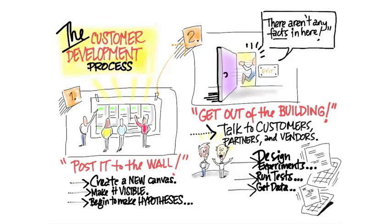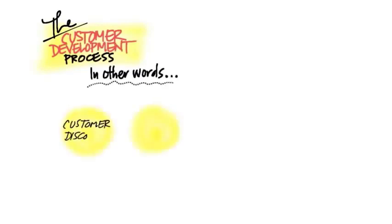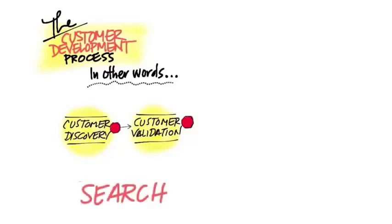The customer development process is actually a four-step process. The first step is customer discovery—this is where you construct your hypotheses and get out of the building and start testing your assumption about whether other people have the same problem or need you think they have. Then you're going to do customer validation and actually see if your proposed solution matches what you think the customer problem was. This test between problem and solution and your features and customers is sometimes called product market fit.